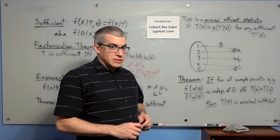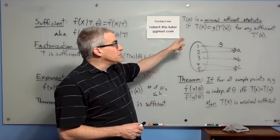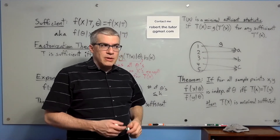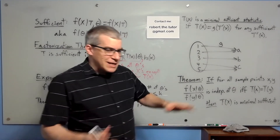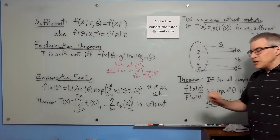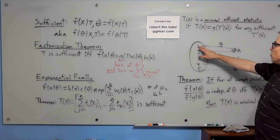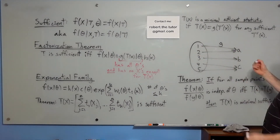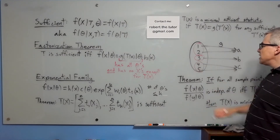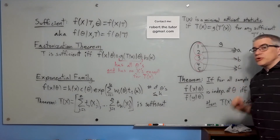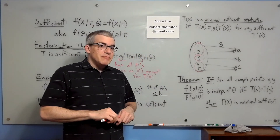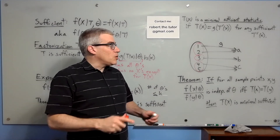Next up: minimal sufficient statistics. There's a definition and an important theorem. T of x is a minimal sufficient statistic if t of x equals a function of t-prime of x for any sufficient t-prime of x. To understand this, think of a function as a partition: a function g mapping 1 and 2 to a, 3 to b, and 4 and 5 to c partitions the domain into disjoint sets. A statistic is minimal if it is the coarsest partition among all sufficient statistics.